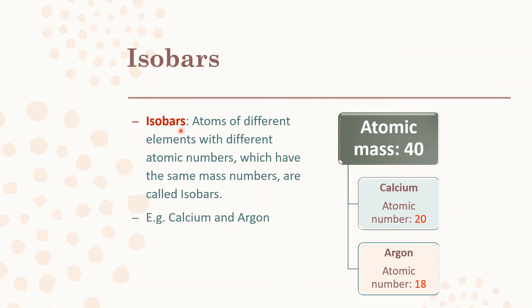Elements are called isobars if their atoms have the same atomic mass but different atomic numbers. For example, calcium and argon both have an atomic mass of 40 — their nucleons (protons + neutrons, present in the nucleus) total 40 — but their atomic numbers are 20 and 18 respectively, meaning they have different numbers of electrons. With this, we end both chapters: Atoms and Molecules, and Structure of the Atom. Thank you, children.